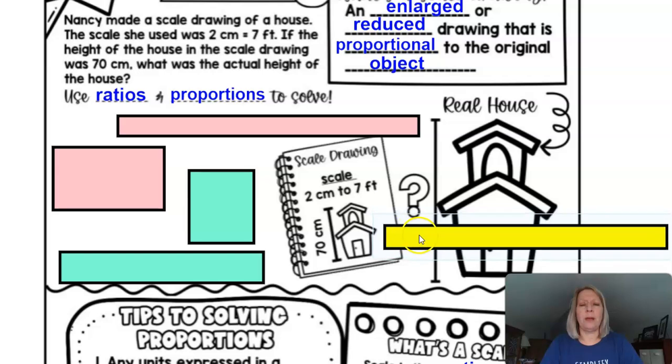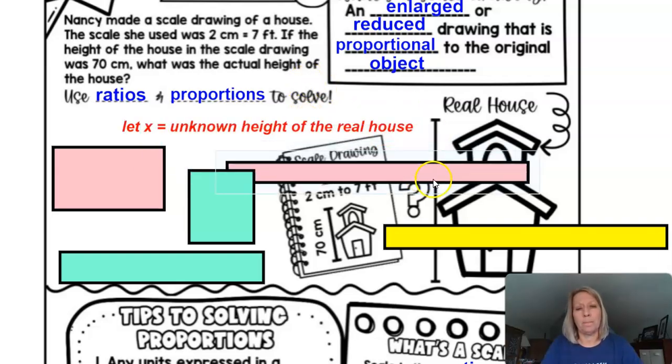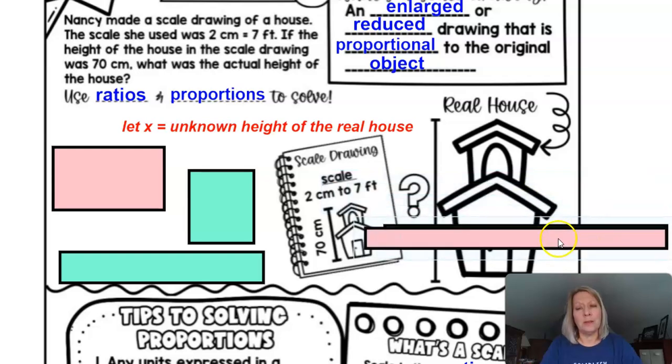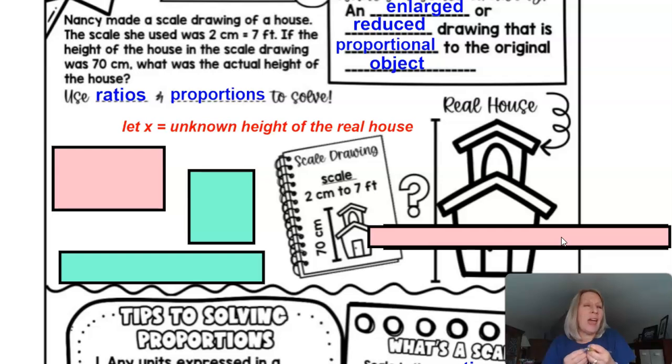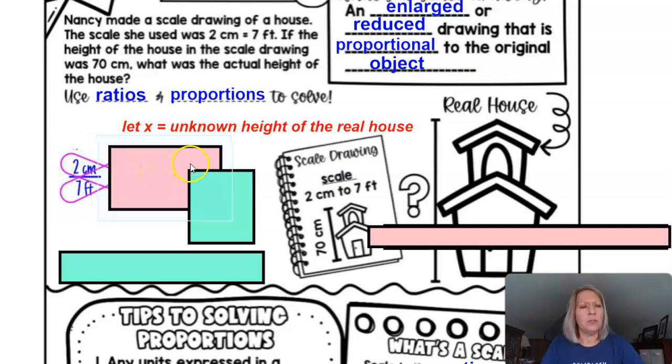Alright, basically if you were able to think of a solution, did you possibly use some kind of ratio and proportion to solve this out? What you could do is identify and place the value of x, like a variable letter x, to find the unknown height of the real house. Basically what the question is asking: what was the actual height of the house? Well that's your mystery number. So that's your x. You're going to let x be the unknown height of that actual or real house.